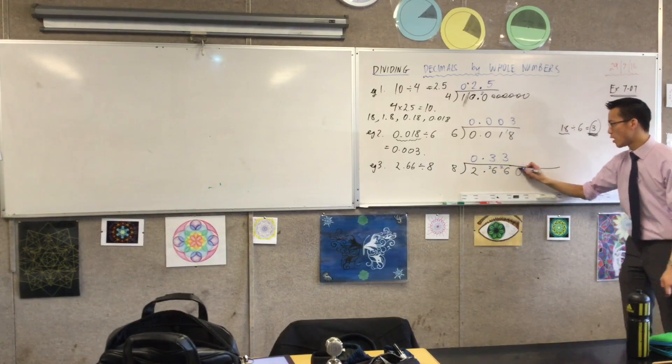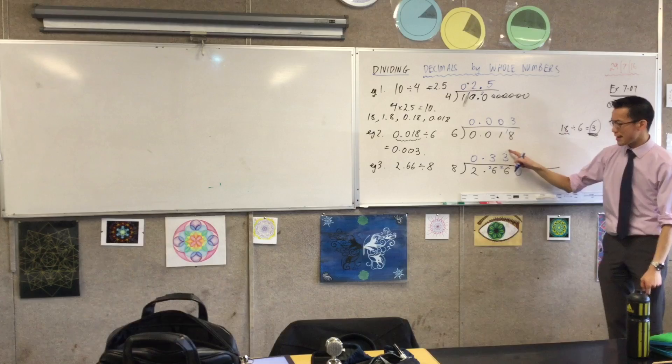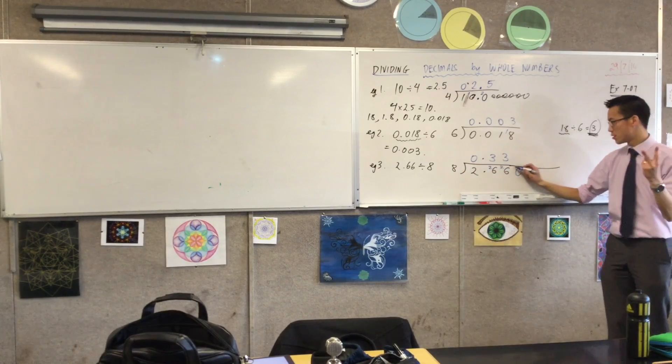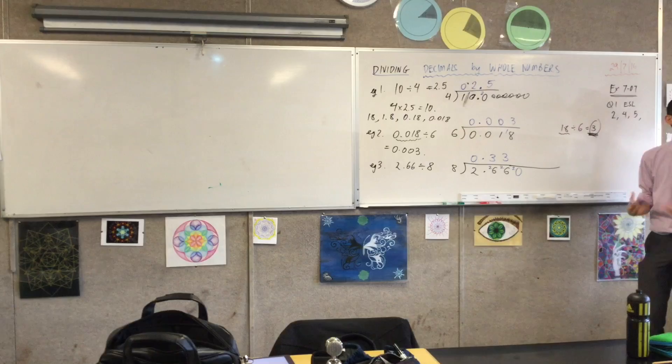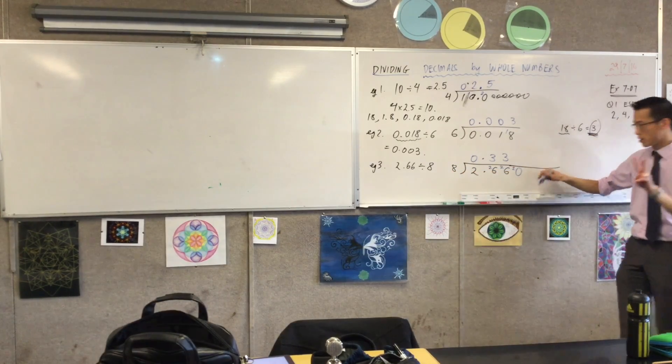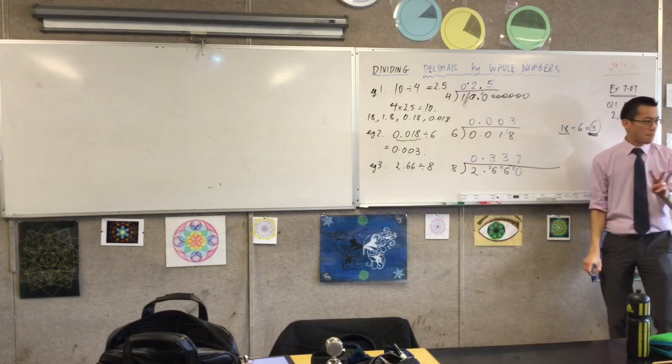the remainder from the three lots of eight in here will be two. So I'll write this two down. And now I ask myself, okay, how many eights are going to fit into this 20? And the answer is two of them.